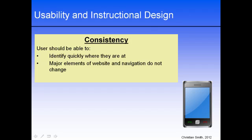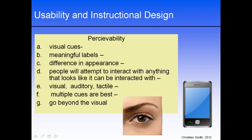The next principle we'll take a look at is perceivability. Users will not interact if they don't know that the opportunity to interact exists. Good design provides ways to help users to know when, where, and how they can interact. Some ways to help users perceive how they can interact with your interface include the following.